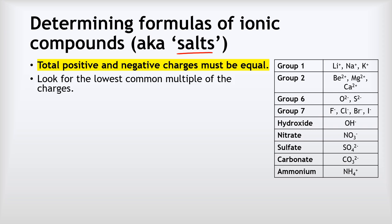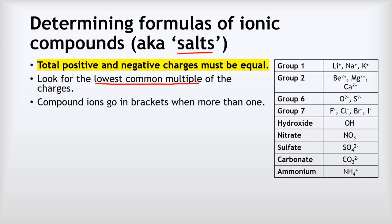A tip is to look for the lowest common multiple of the positive and negative charges. The last thing is that if we're using compound ions — which contain more than one atom, things like hydroxide, nitrate, sulfate, carbonate, ammonium — if there's more than one of those it will need to go in brackets, but only if there's more than one. So let's see how this pans out.